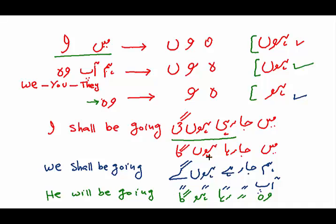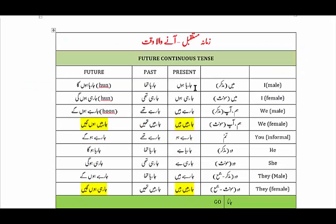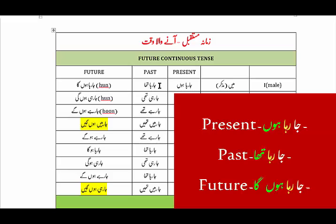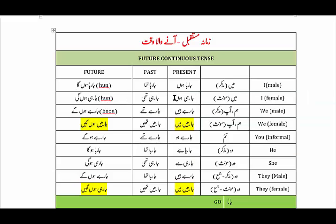We must focus on these sounds in future continuous tense. The difference is in the use of raha, rahi, rahe, and then hoonga, hoongi. Comparing tenses: present — main ja raha hun (I am going); past — main ja rahi tha (I was going); future — main ja rahi hoonga (I shall be going). Main ja rahi hoongi is the female form.